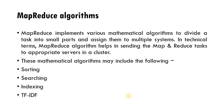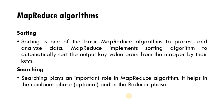The first algorithm is sorting. Sorting is one of the basic MapReduce algorithms used to process and analyze data. For any basic task we need to sort the data. MapReduce implements sorting algorithms to automatically sort and output key-value pairs from the mapper by their keys. Since data is stored in key-value pairs, we sort data based on the key.